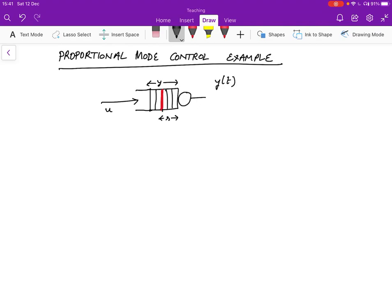And the reference value R is given as a certain constant. And we want to choose the control input U so that Y is maintained despite the disturbance. So how should we build such a controller? And we're going to use, in this case, proportional mode control.